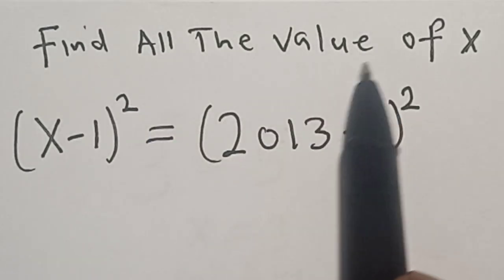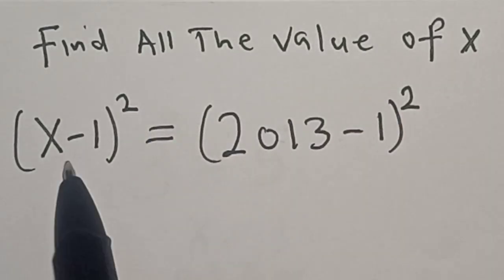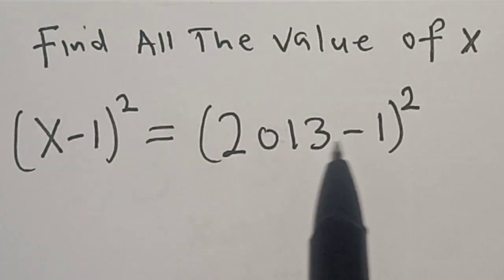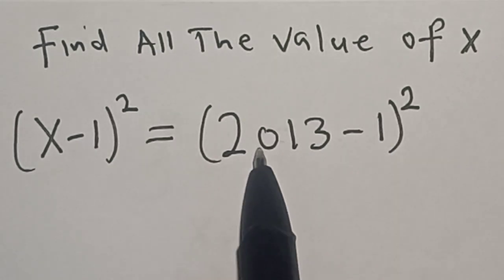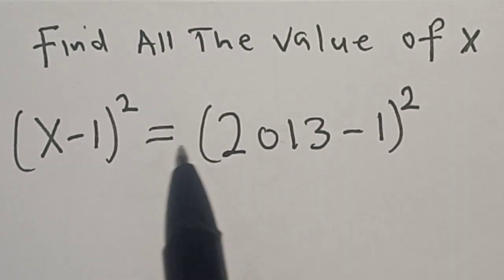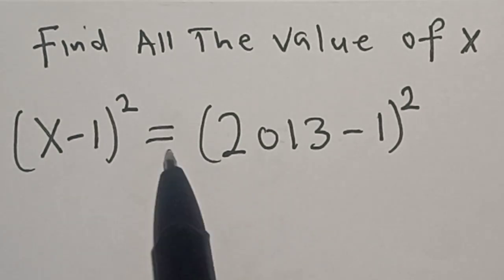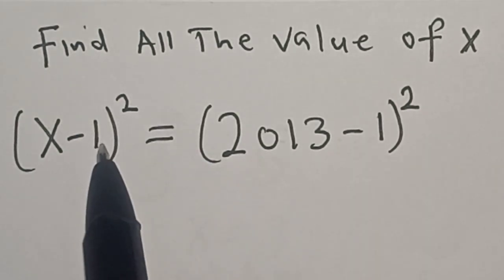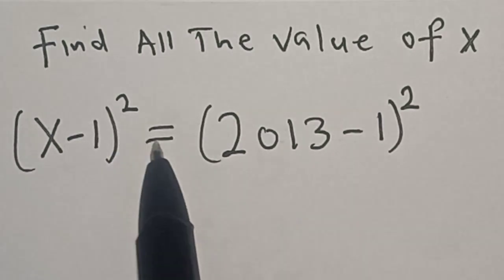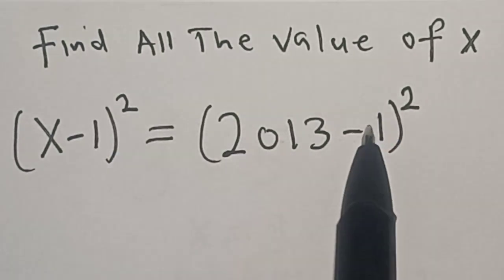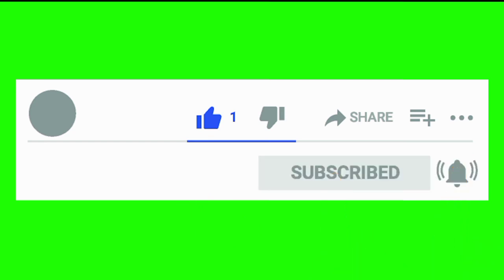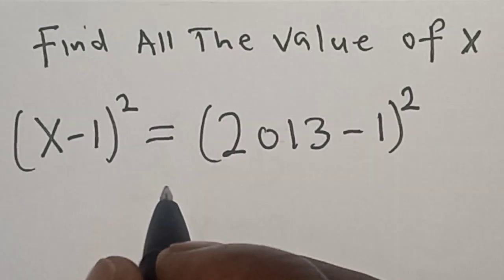Find all the values of x where (x - 1)² is equal to (2013 - 1)². Welcome to my class. In this class we want to find the value of x from this given equation. Before we proceed, please don't forget to like, share, comment, and subscribe. Thank you. Solution.